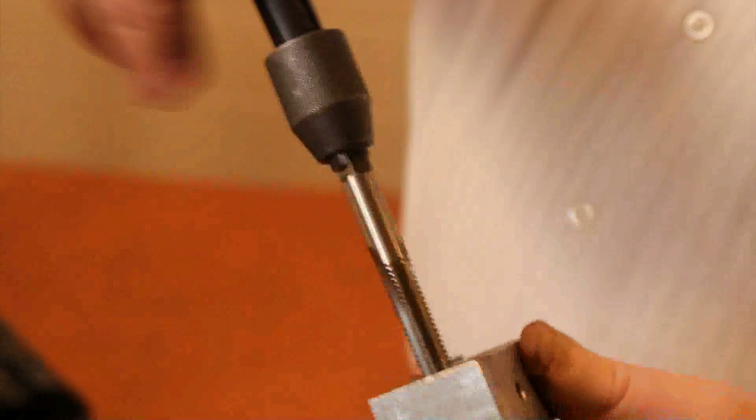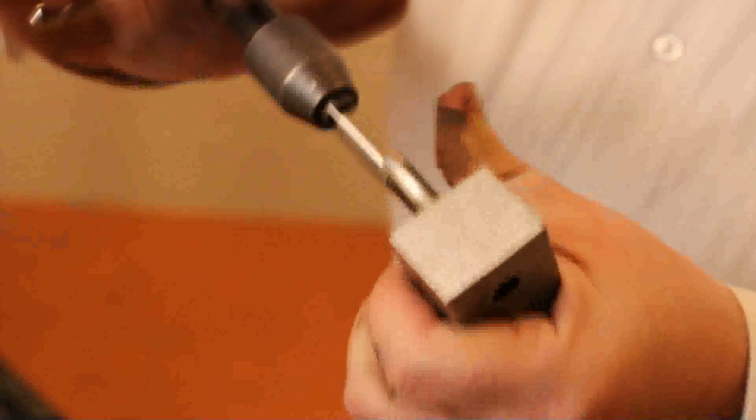Now all we need to do is just run a new tap through here. This will just clean out any small debris that might have been left in the threads. And as you can see the tap goes in there pretty smooth and it's all the way back through. So now your hole and your part are ready for reuse.